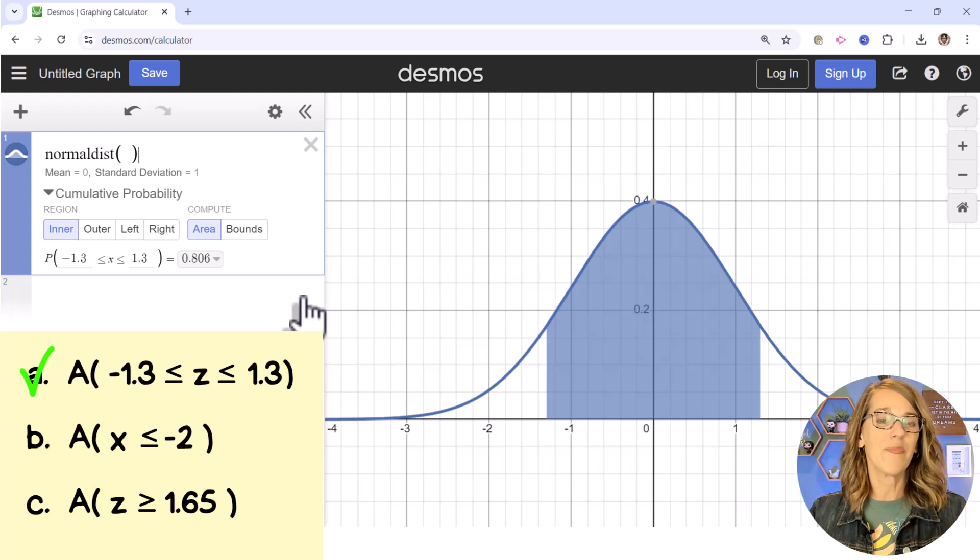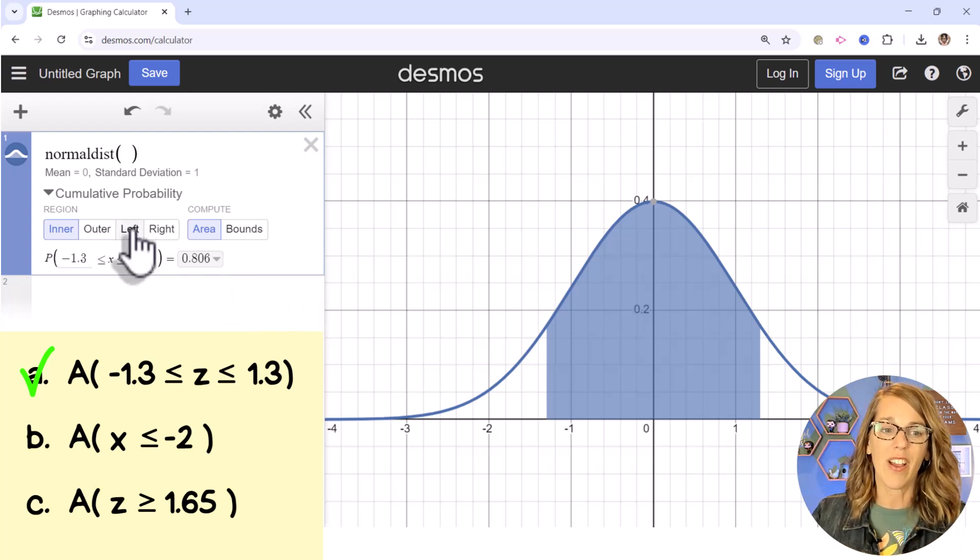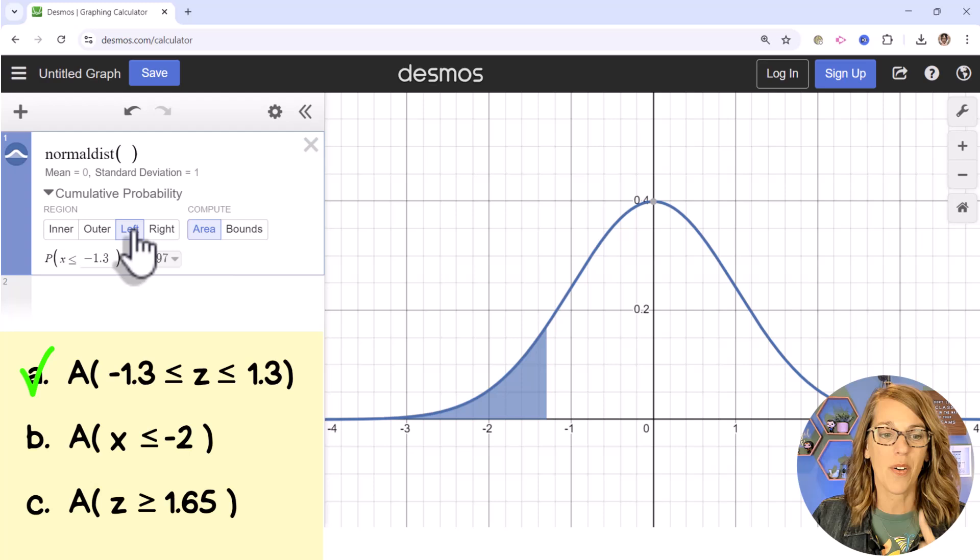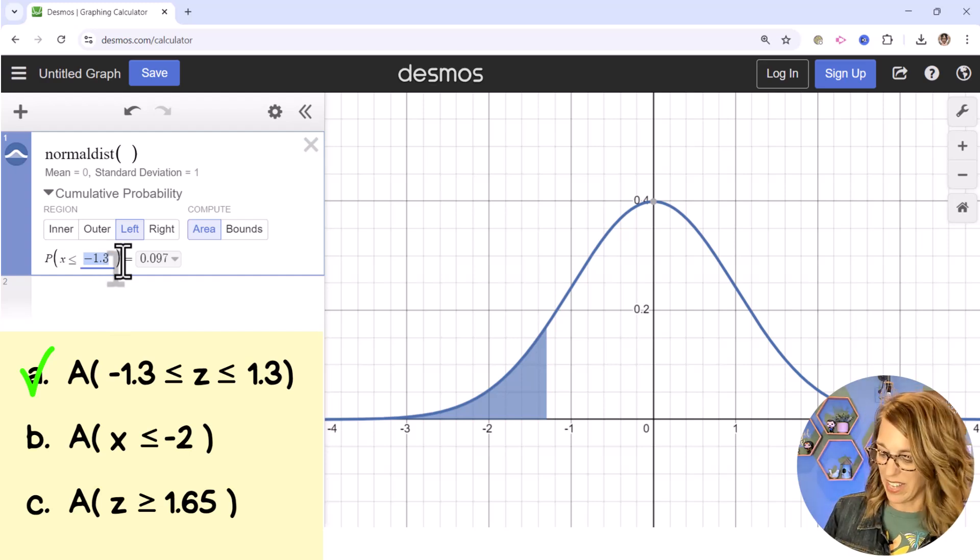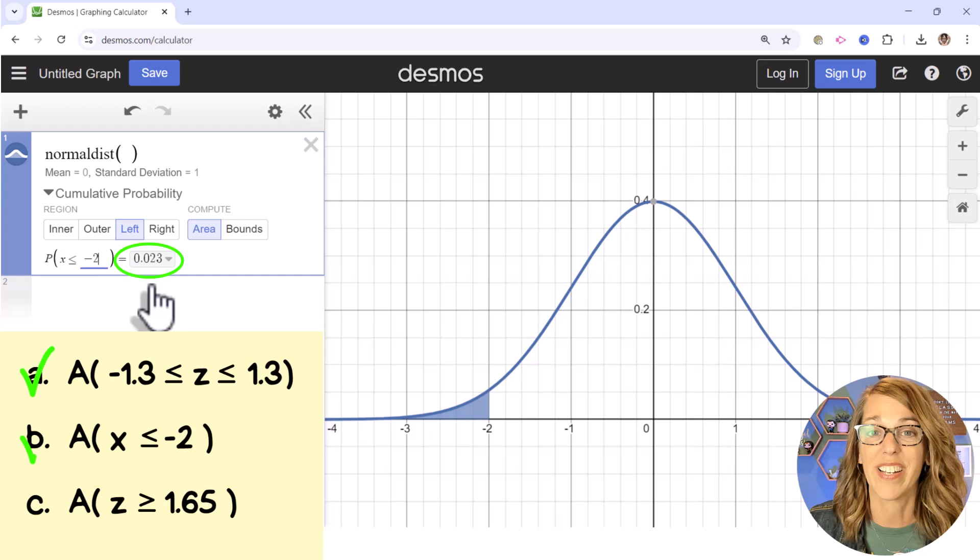Part B says the area when my z score is less than or equal to negative 2. Less than or equal to, that's going to be an area on the left. So I'm going to go area on the left. And I don't want to be less than or equal to negative 1.3. I want to be less than or equal to negative 2. And there's my area of 0.023.